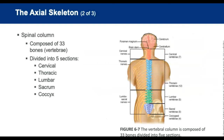Moving from the skull down through the axial skeleton, the spinal column consists of 33 vertebrae divided into five sections, each numbered from top to bottom.